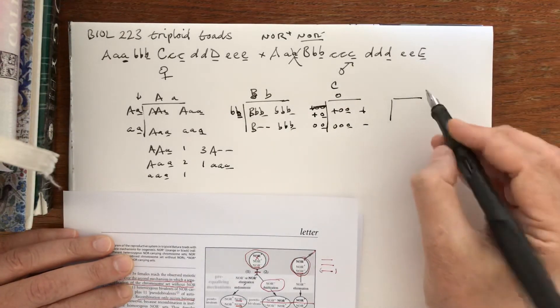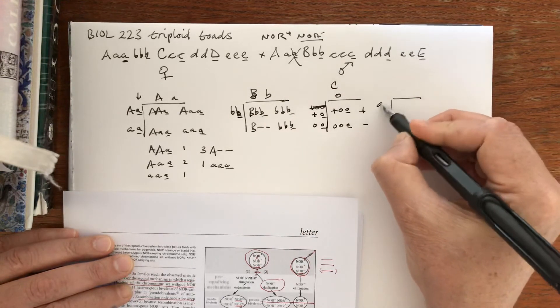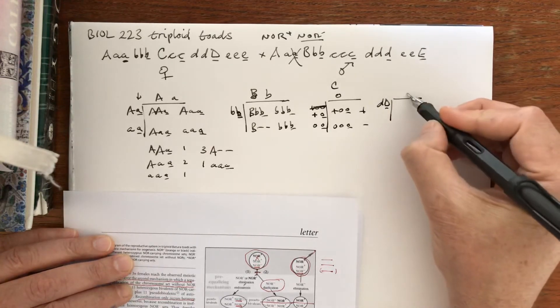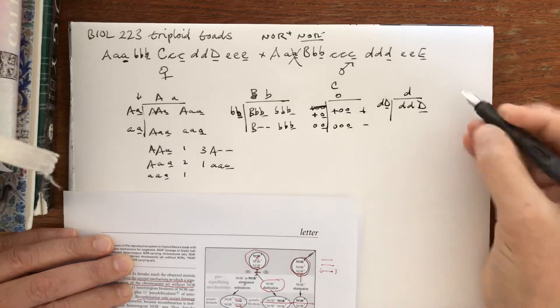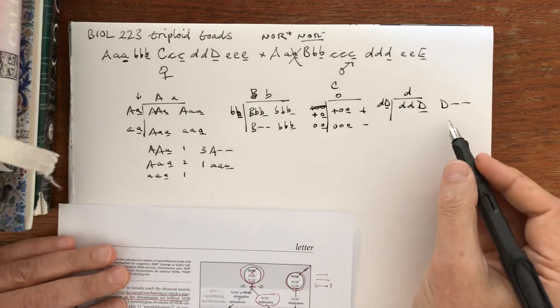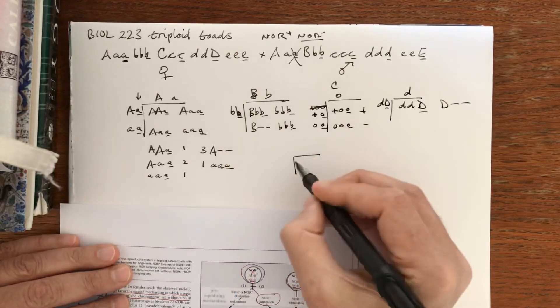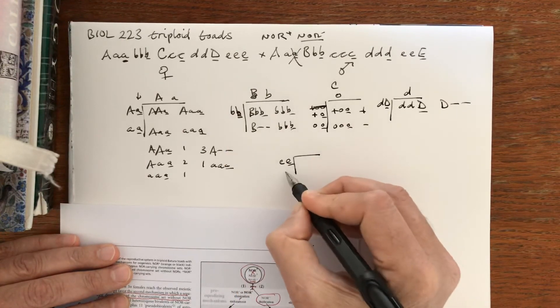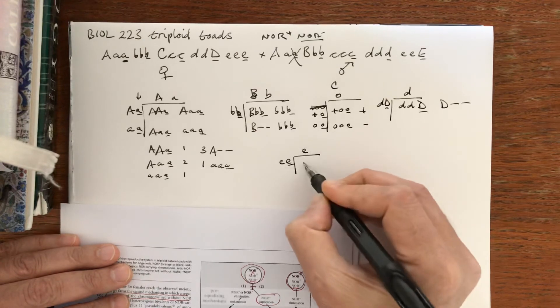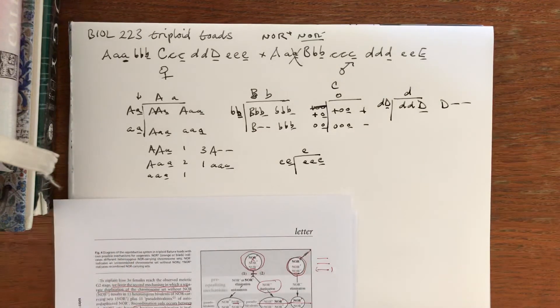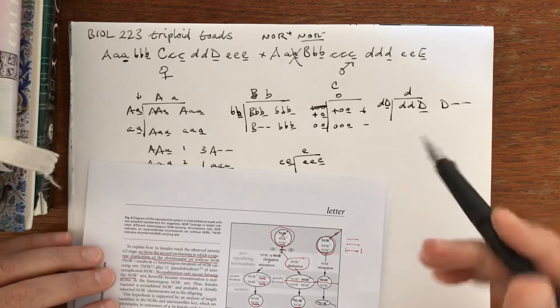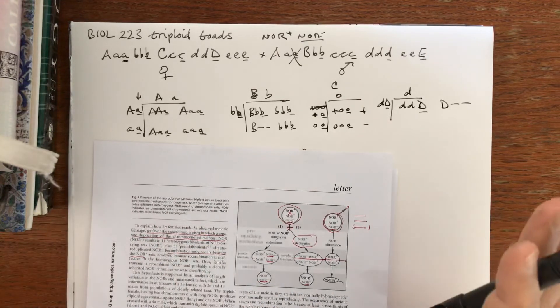At E, the female can make only this gamete and the male can make only this gamete, so all will be this. So we see that just dividing things, simplifying things, following the mechanism, using a Punnett square and just doing the obvious and not being flustered by something really strange like triploidy - having these triploid toads needn't confuse us. We can manage quite well.